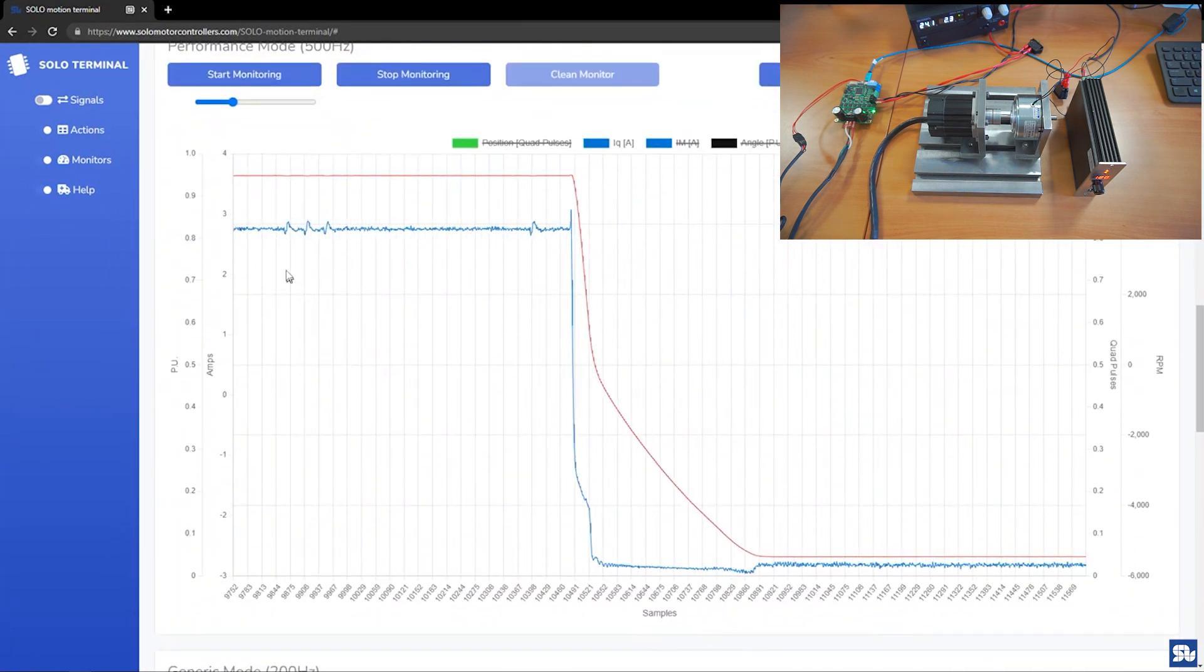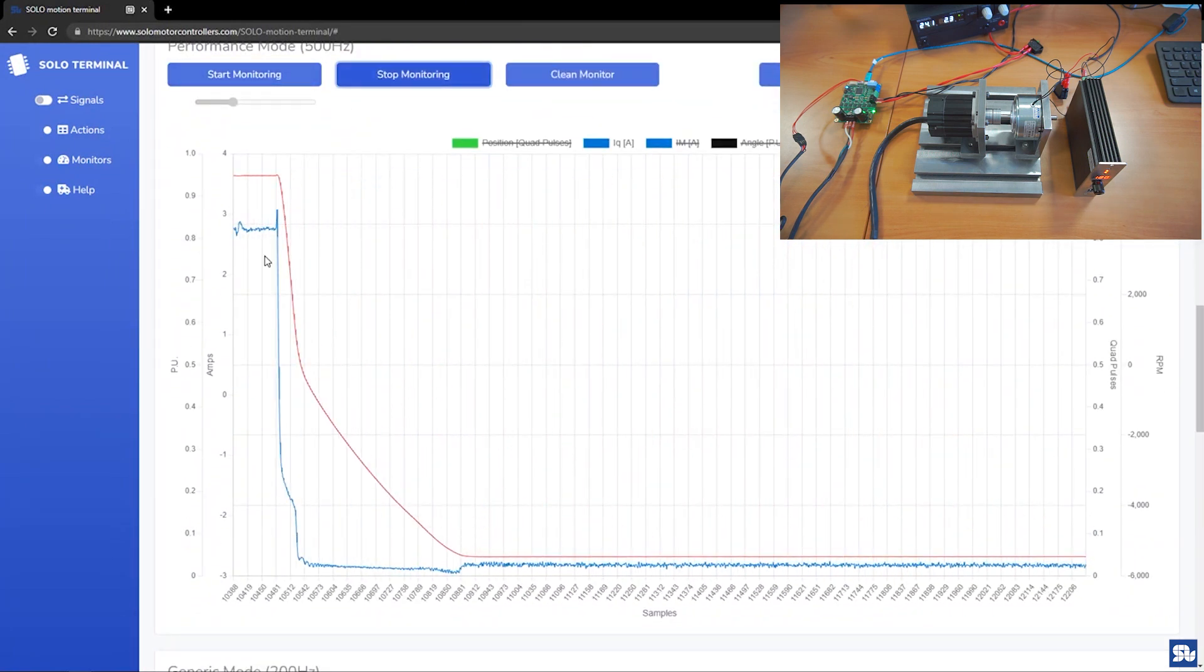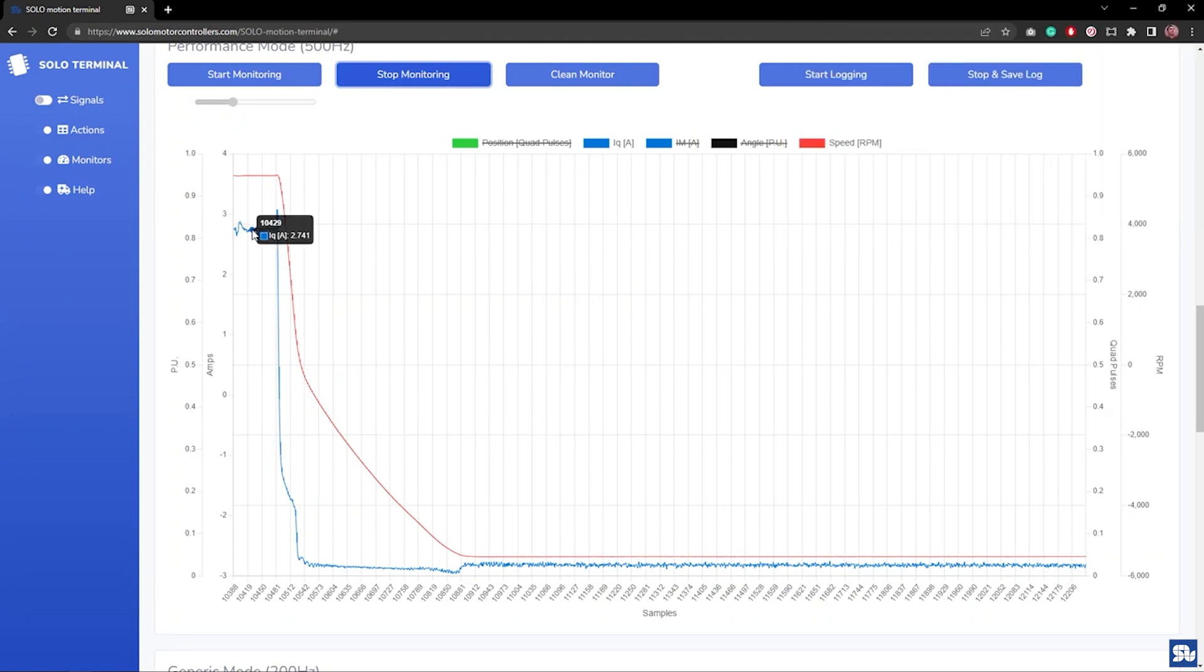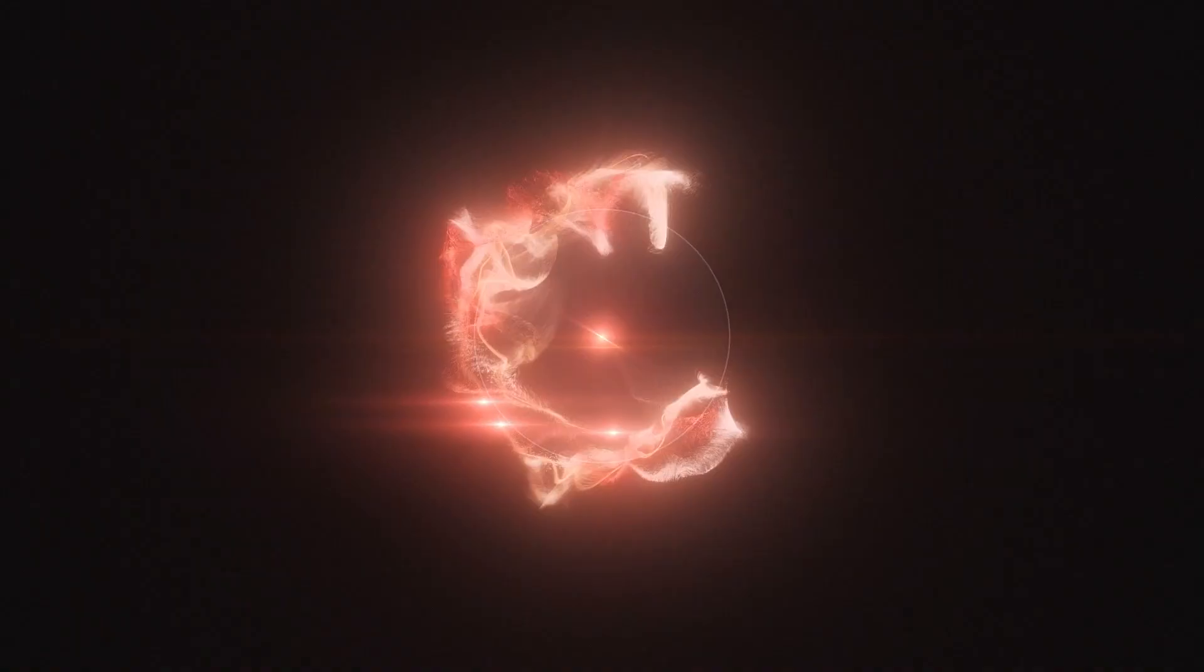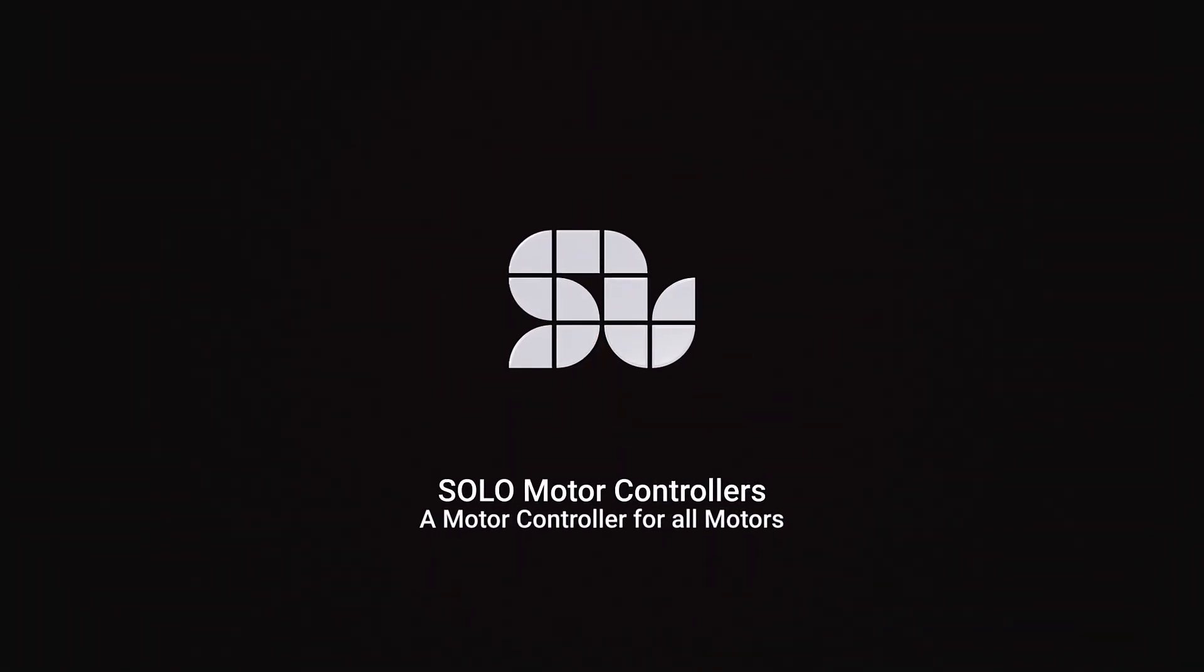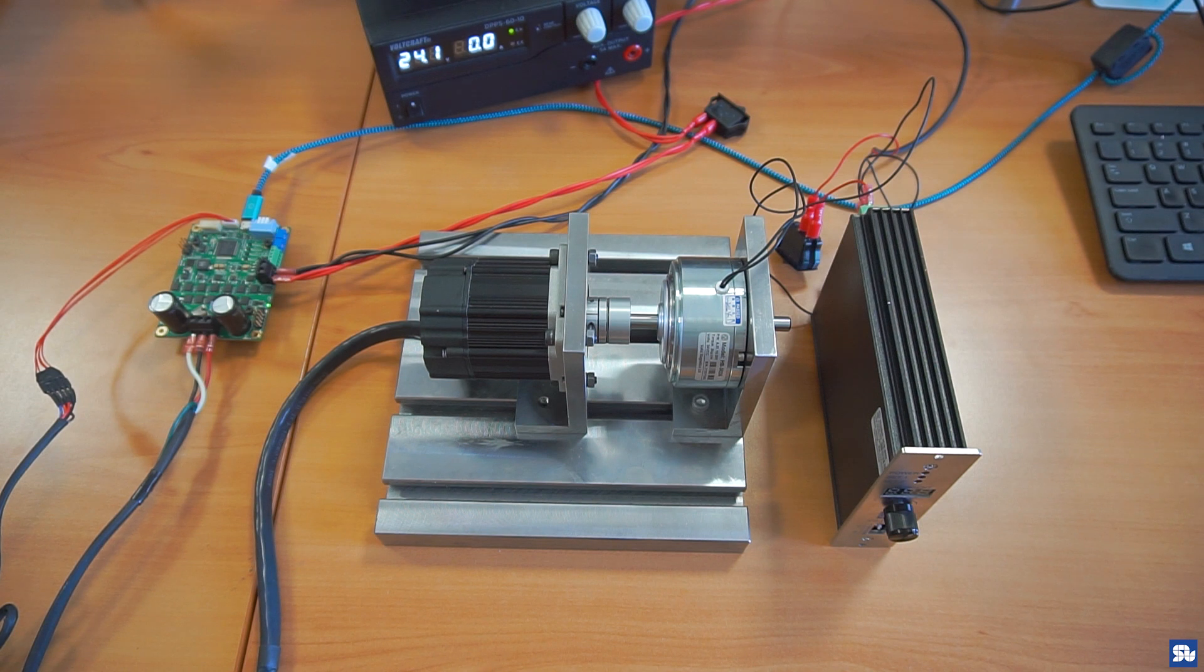You see that the motor goes from negative value to positive value, from positive 2.7 amps to negative 2.7 amps. The speed decelerates from positive 5400 RPM to negative 5400 RPM. Hi everyone, today I'm going to show you in practice the notion of torque controlling.